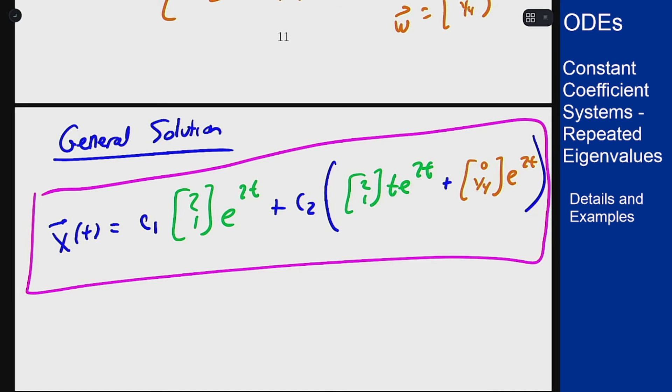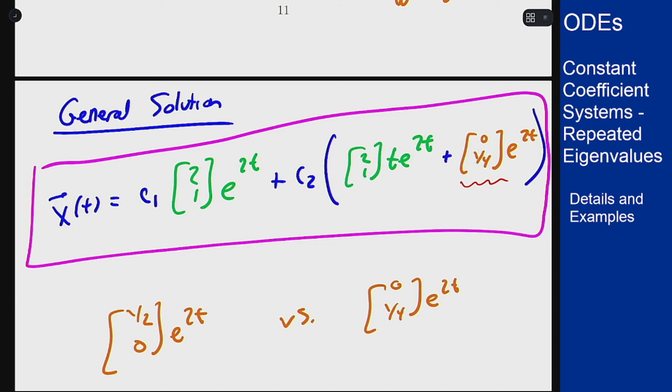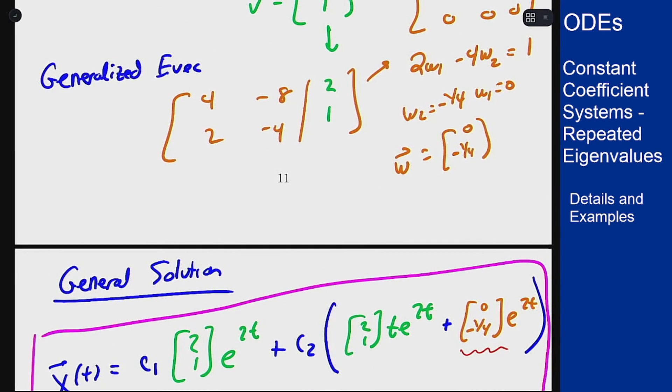Now just to relate to the previous example, the first time we did this we had this last term here being [1/2; 0] e to the 2t, whereas now we have [0; 1/4] e to the 2t. I have now realized my mistake from earlier—these should all be negative 1/4s, because I want this to be positive 1 here. This value has to be negative 1/4.